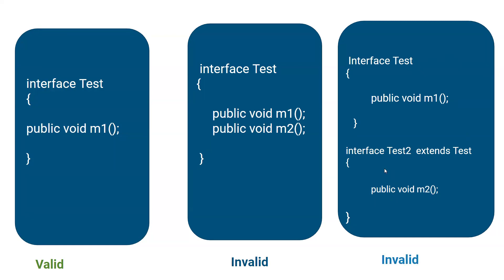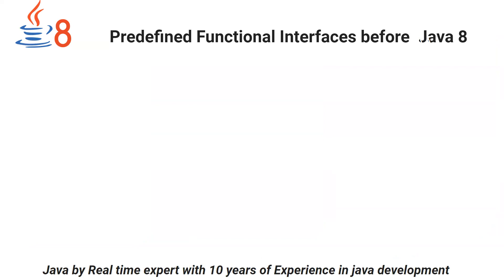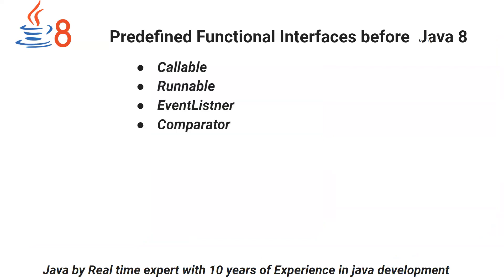That is all about the functional interface definition and structure. The next question is: are there any functional interfaces already present in Java 8 or before Java 8? Yes, before Java 8 there are some functional interfaces already there. There are some predefined functional interfaces before Java 8 called Callable, Runnable, Event, and Comparator. These are examples of functional interfaces before Java 8, and they are called functional interfaces because they have only a single abstract method.